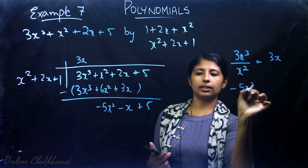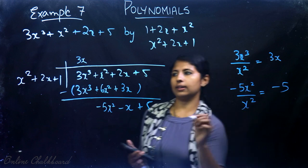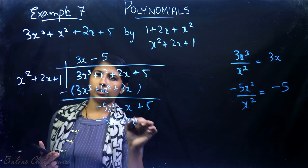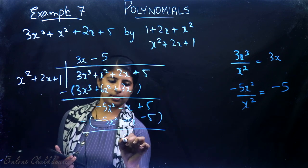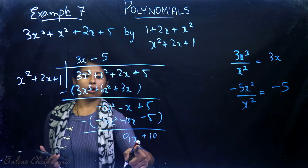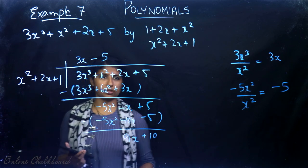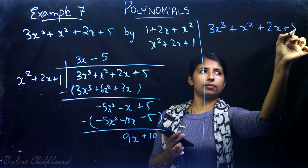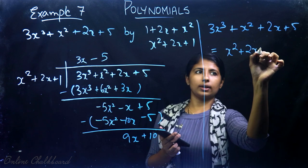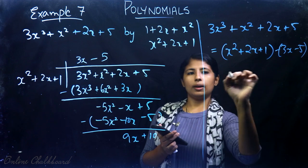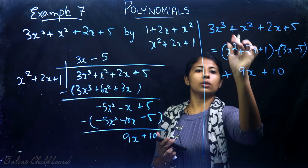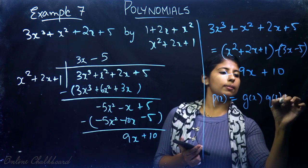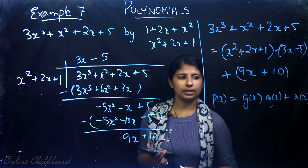Divide −5x² by x² to get −5. Multiply −5 by (x² + 2x + 1) to get −5x² − 10x − 5. Subtracting gives remainder 9x + 10. Since degree of 9x is less than degree of divisor x², we stop. So: 3x³ + x² + 2x + 5 = (x² + 2x + 1)(3x − 5) + (9x + 10). Here P(x) = G(x)·Q(x) + R(x).